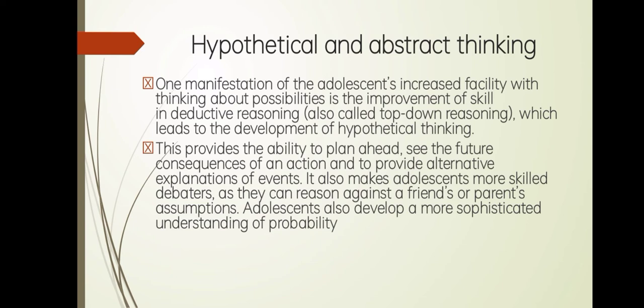Adolescents also develop a more sophisticated understanding of probability. Adolescence marks the beginning of more complex thinking processes, including abstract thinking — the ability to form their own new ideas or questions. It can also include the ability to consider many points of view and compare or debate ideas or opinions.